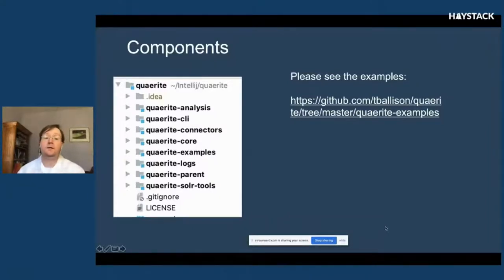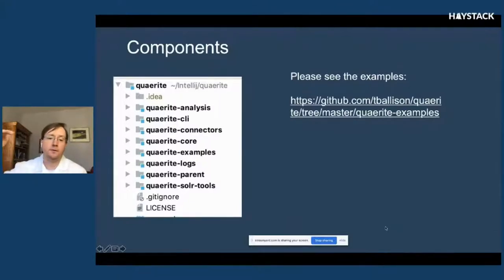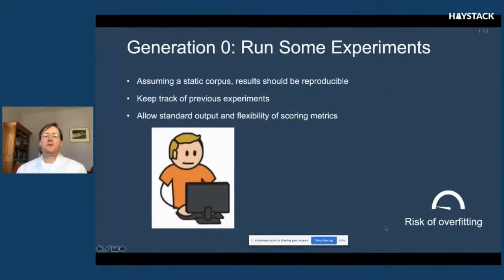You can copy stuff from an Elasticsearch 2 index to an Elasticsearch 7 index without using a version-specific client, or you can go from Solr to Elastic easily — that's a side benefit of this project. I'd also encourage people to check out the examples directory and examples README on the GitHub page. There's also a placeholder for logs that I'm hoping to build out with others.